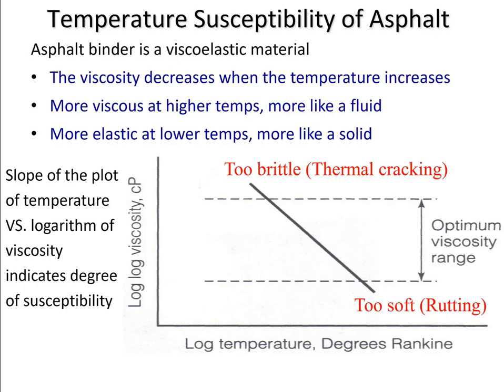Hello everyone. In this video I will talk about temperature susceptibility of asphalt and the Superpave performance grading system. The characteristics of asphalt are greatly affected by temperature, and that's the most significant feature of asphalt. Basically it's a viscoelastic material, and the viscosity decreases when the temperature increases. At higher temperatures it's more viscous, more like a fluid, and at lower temperatures it's more elastic, more like a solid.